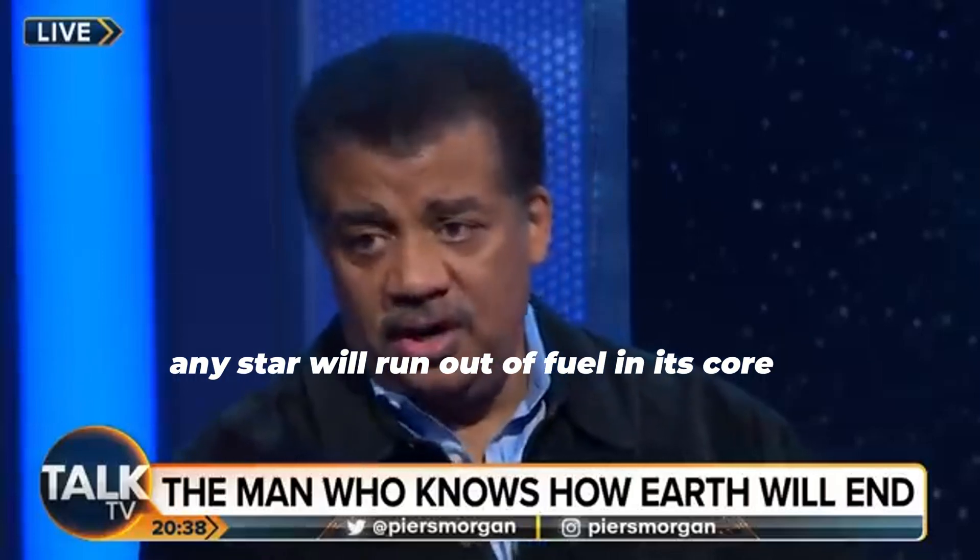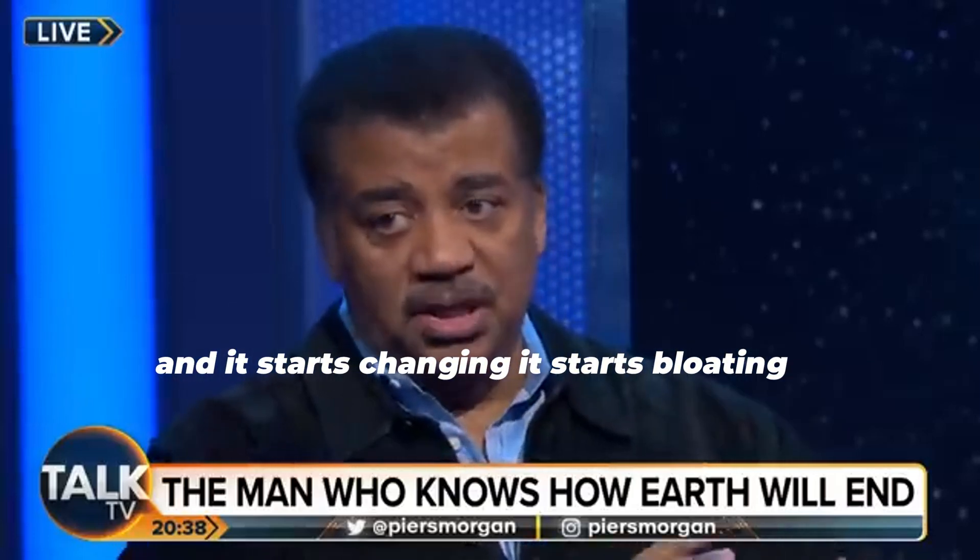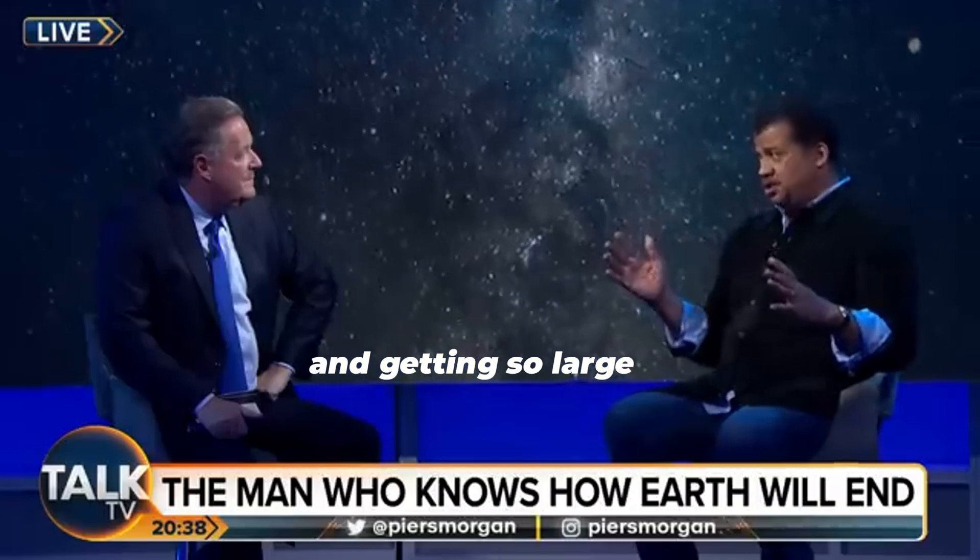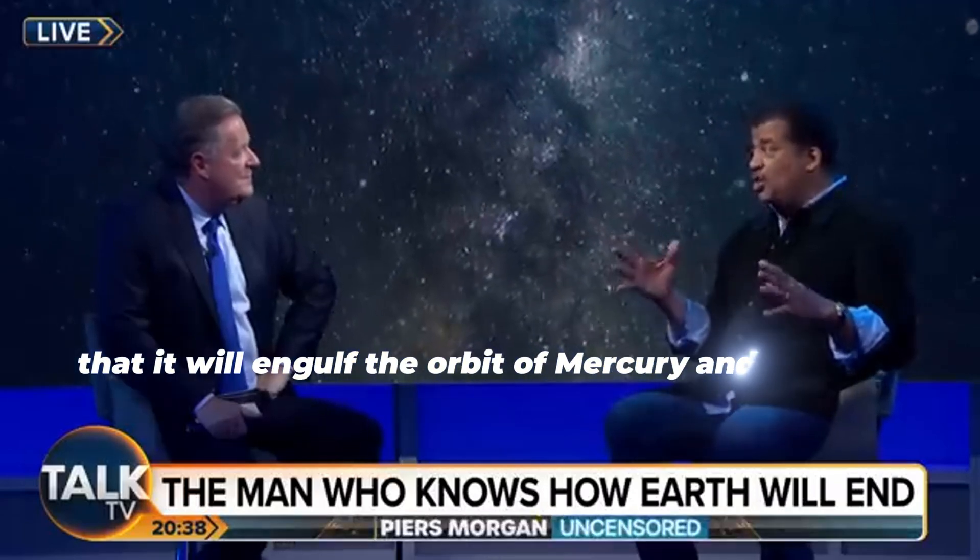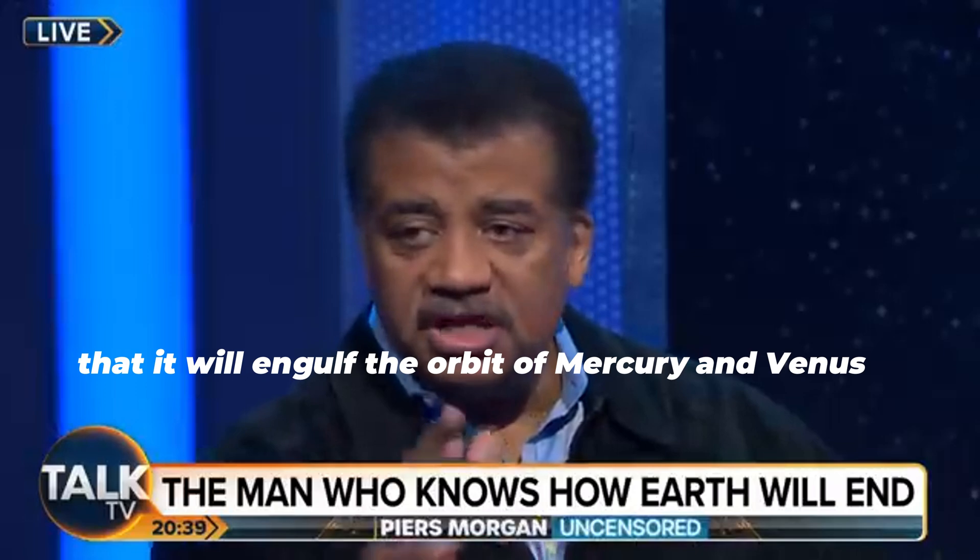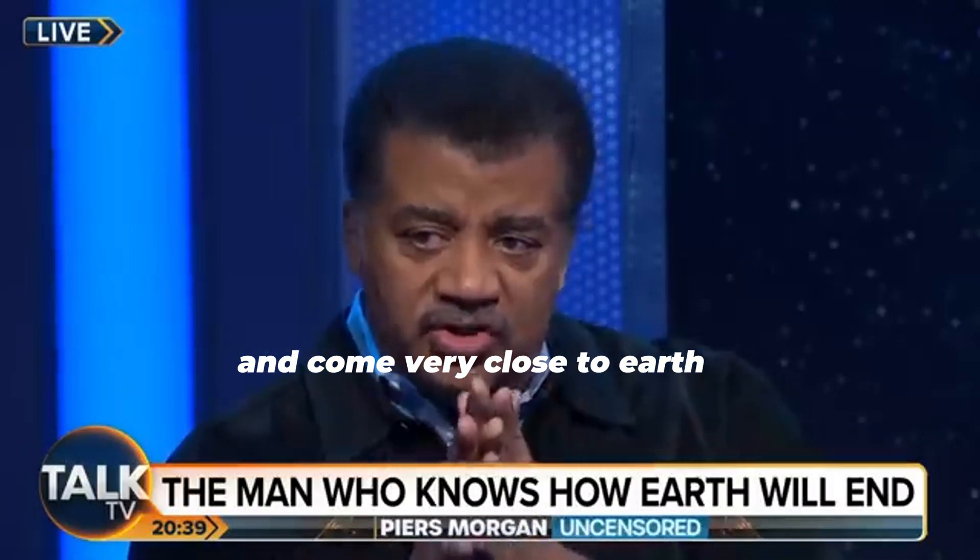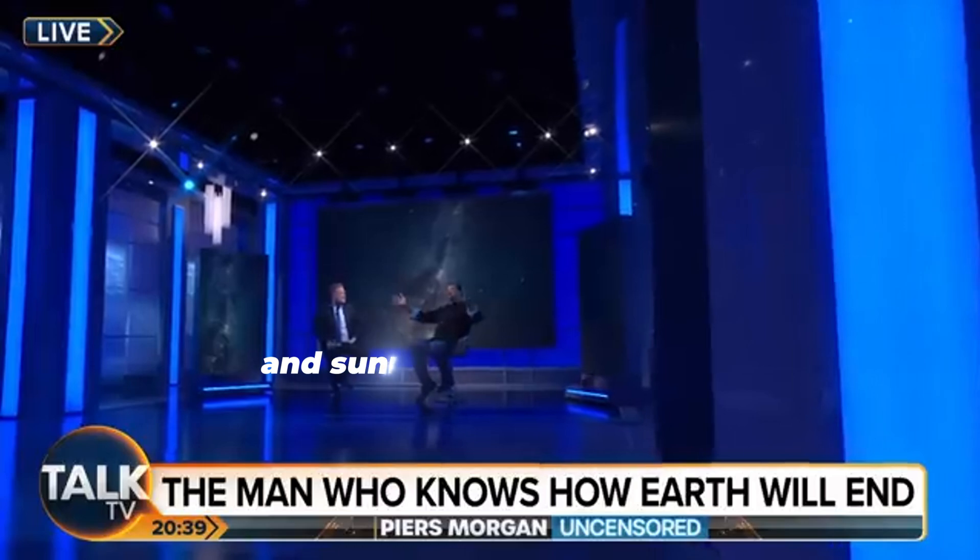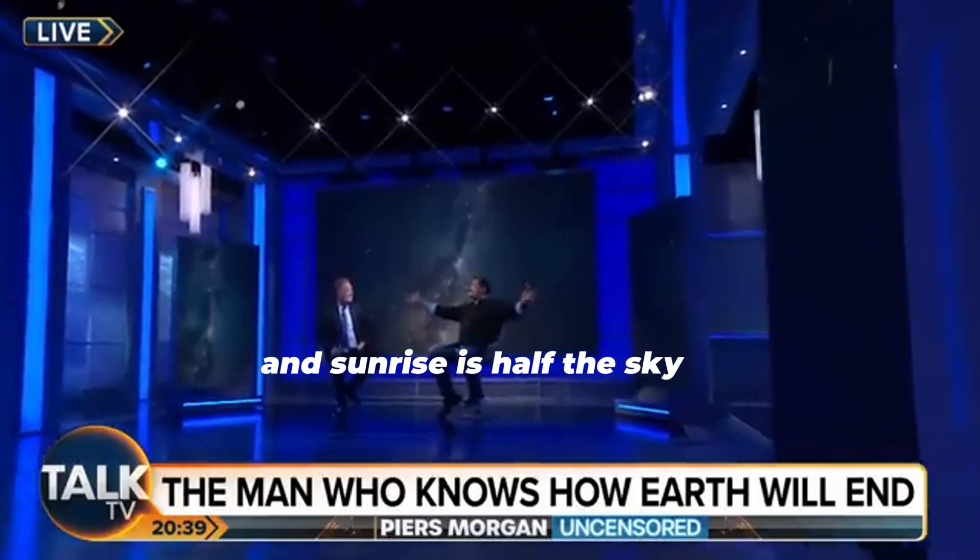Any star will run out of fuel in its core and it starts changing, it starts bloating and getting so large that it will engulf the orbit of Mercury and Venus and come very close to Earth. So imagine looking on the horizon and sunrise is half the sky.